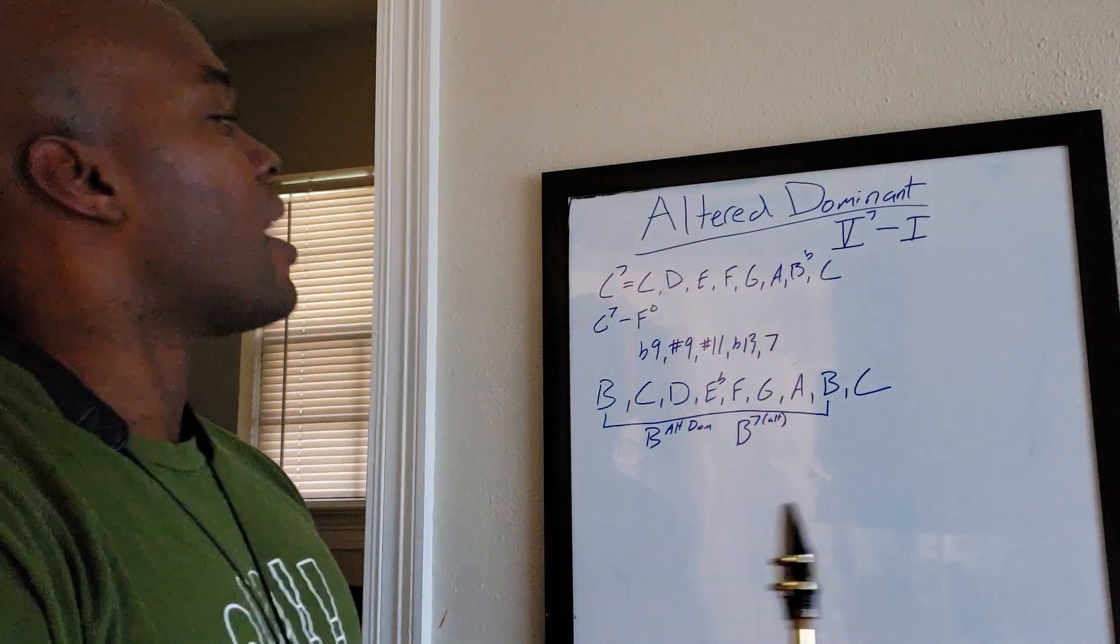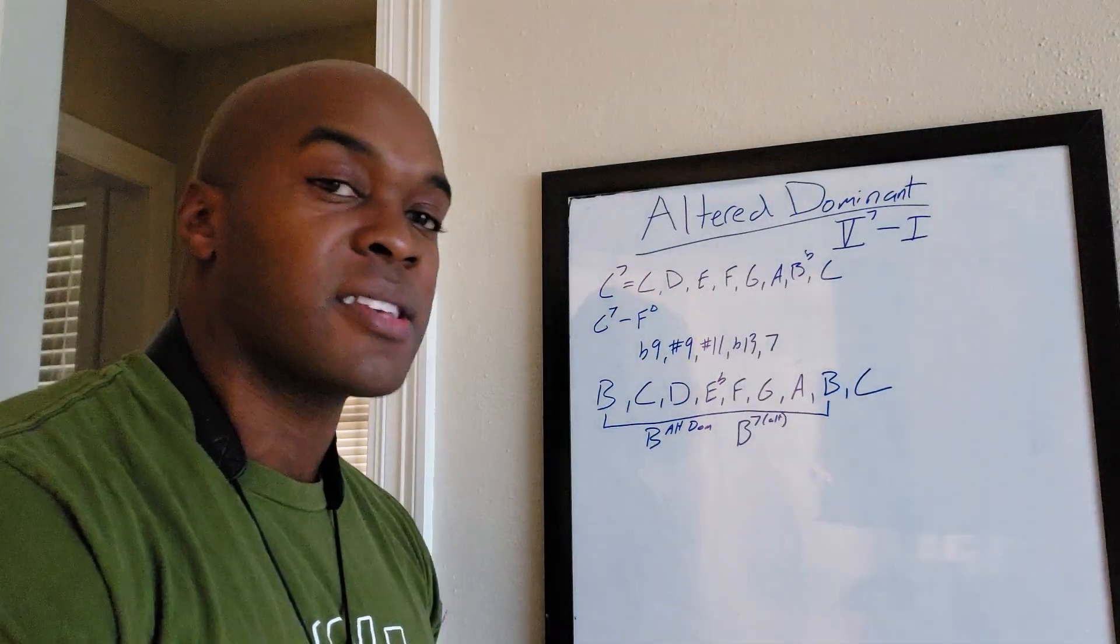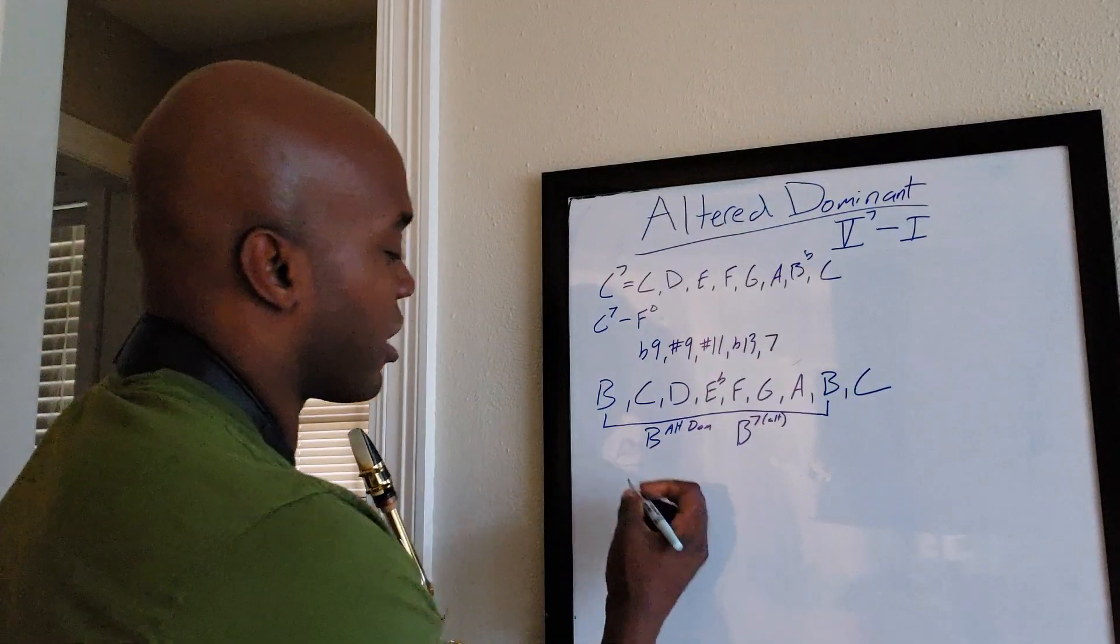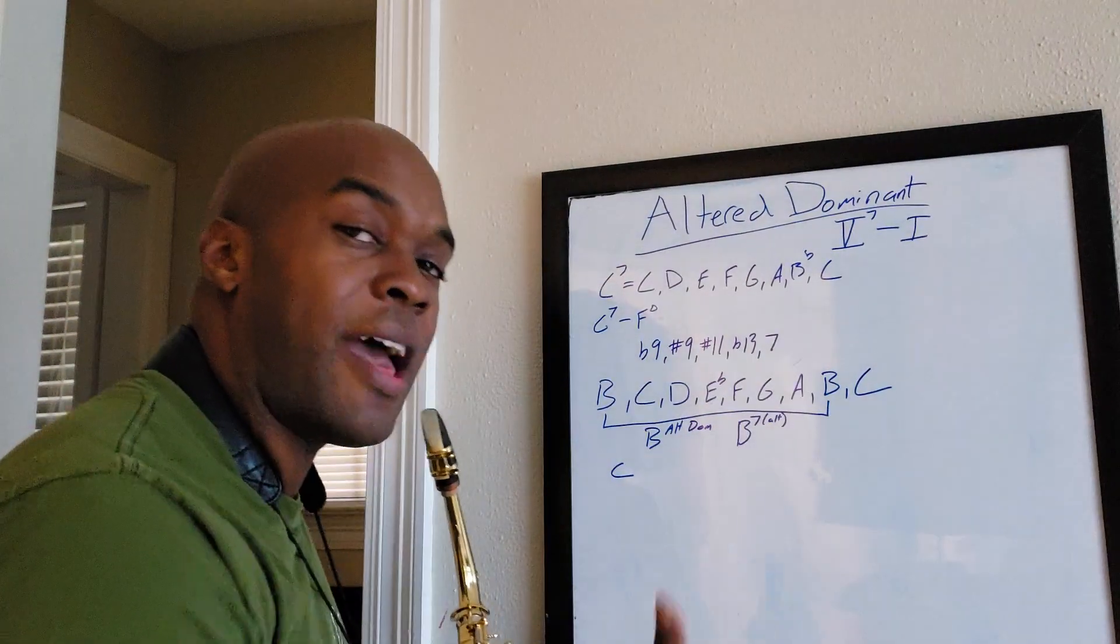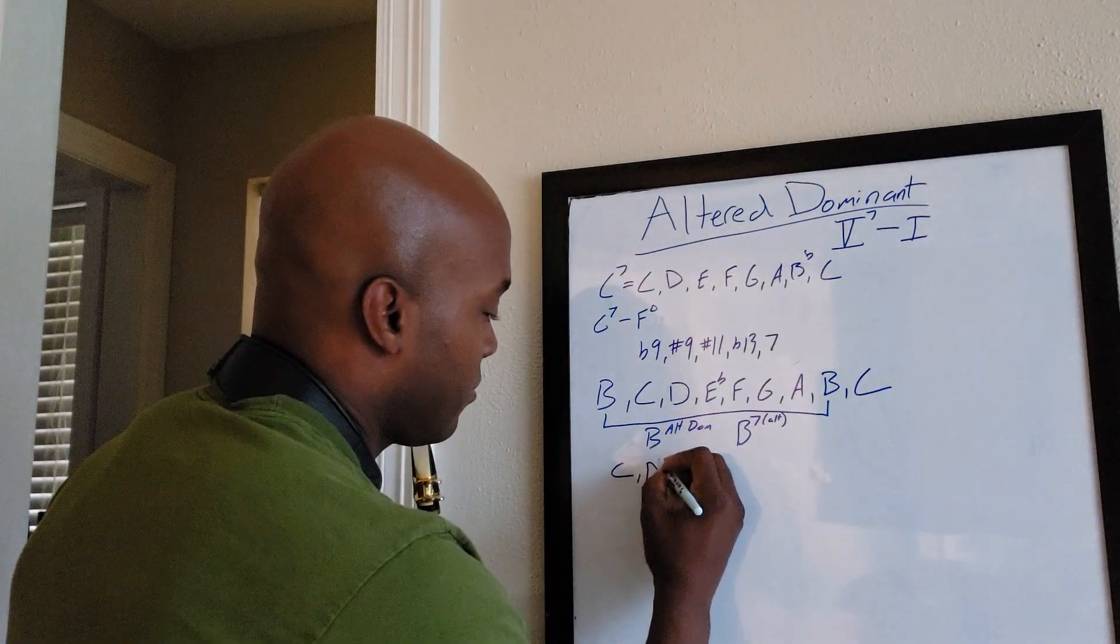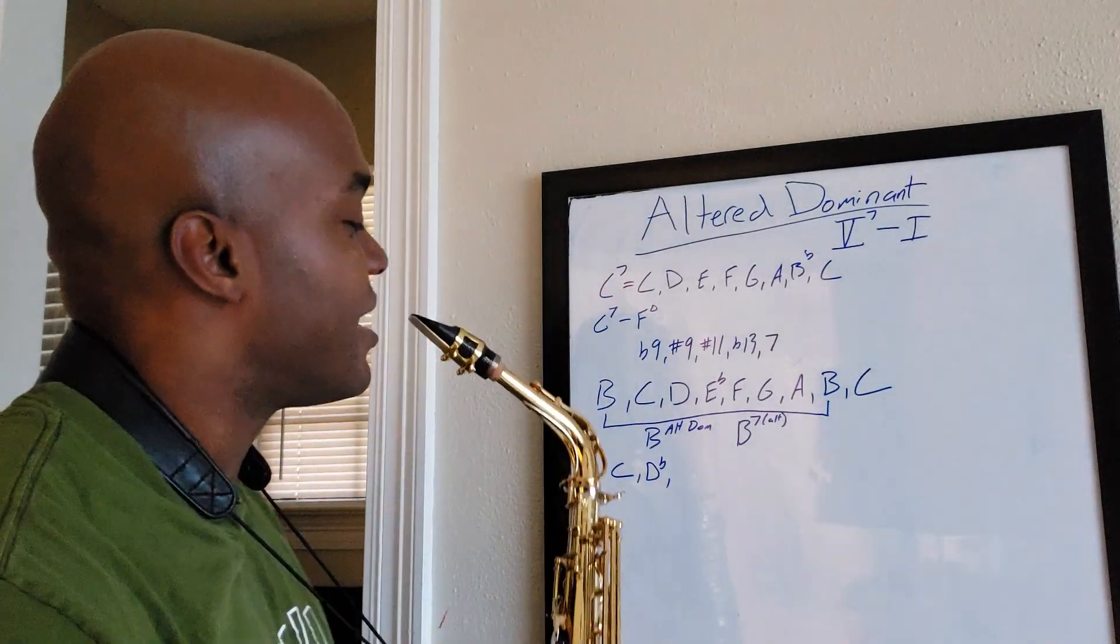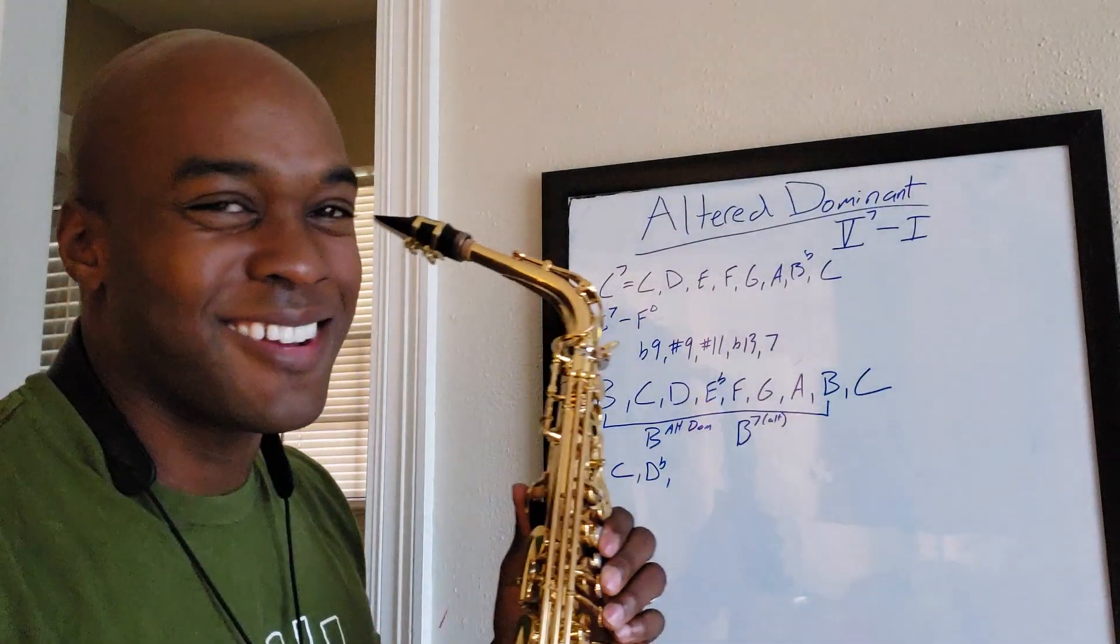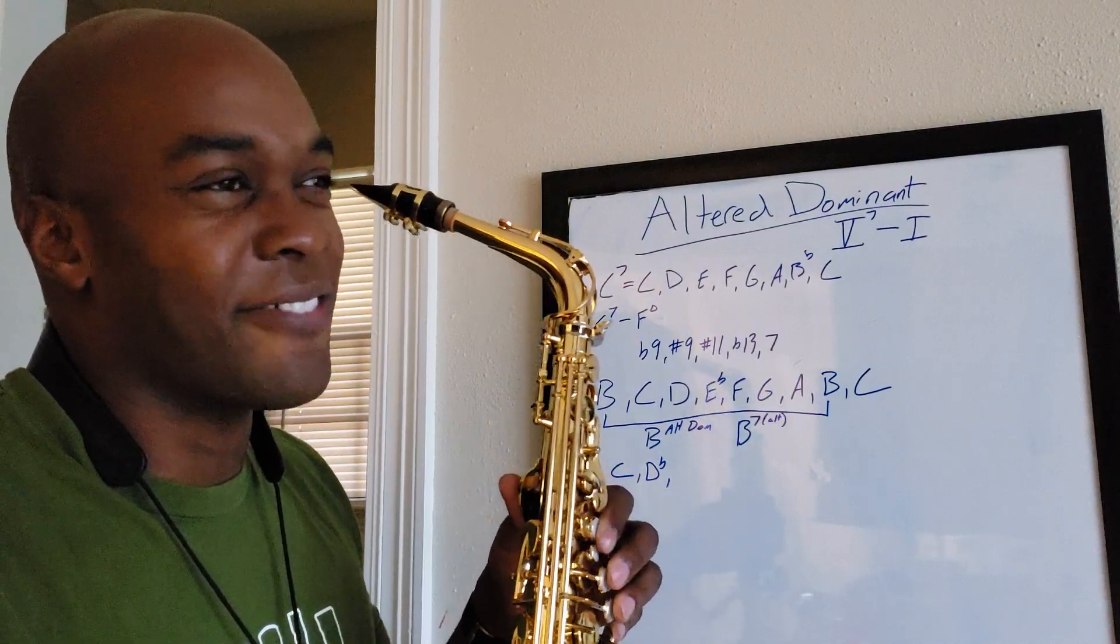So in this case we're going to switch it back up here. You say, how do I figure out what a C7 altered dominant scale is? Well, very simple. We're going to do the process in reverse. We're going to go C, we're going to go up a half step. So up a half step from C is C sharp or D flat, and we're gonna think D flat ascending melodic minor scale.